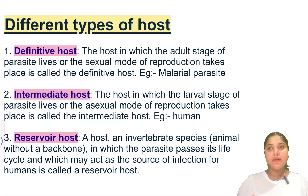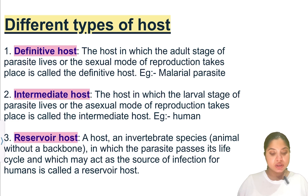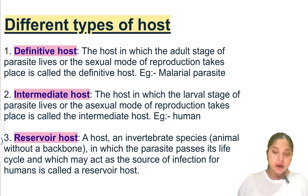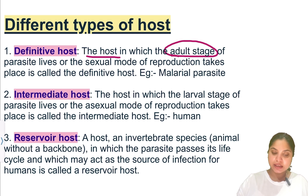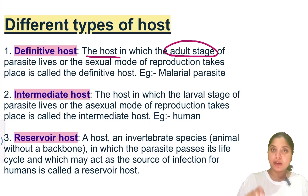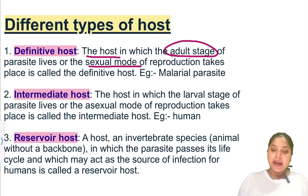If we look at different types of hosts, there are three types: definitive host, intermediate host, and reservoir host. The definitive host is the host in which the adult stage of the parasite lives, or the sexual mode of reproduction takes place. The adult stage resides in the definitive host, and sexual reproduction also occurs there.